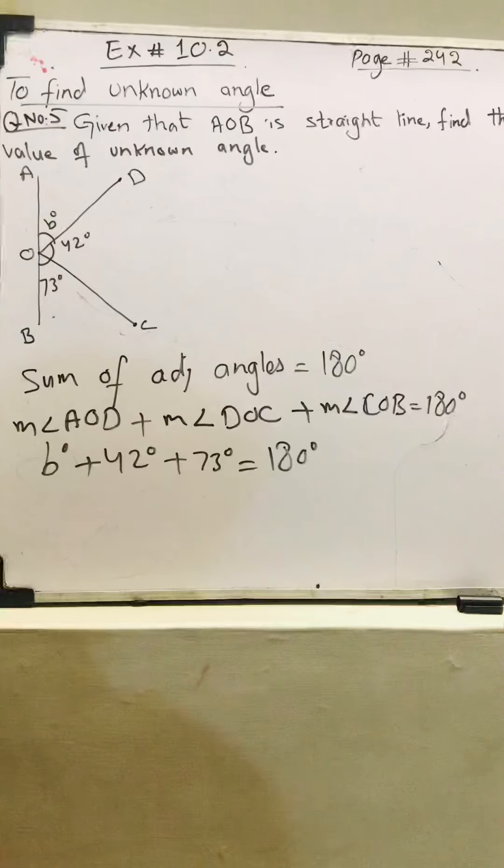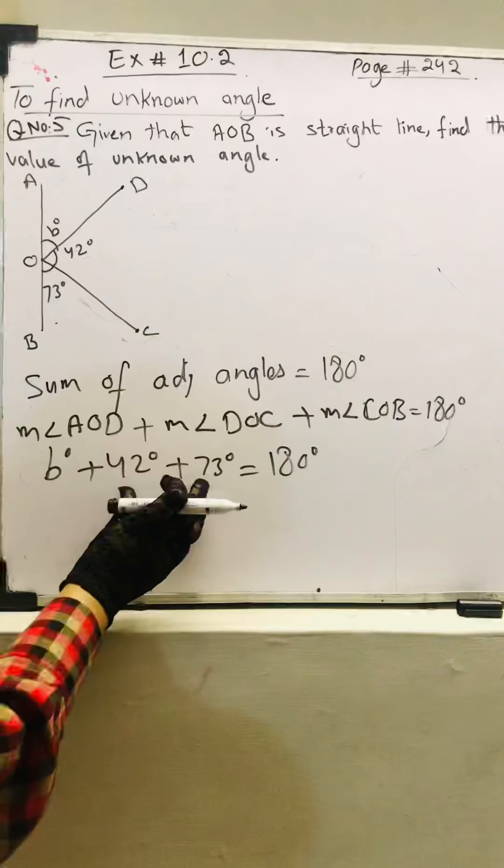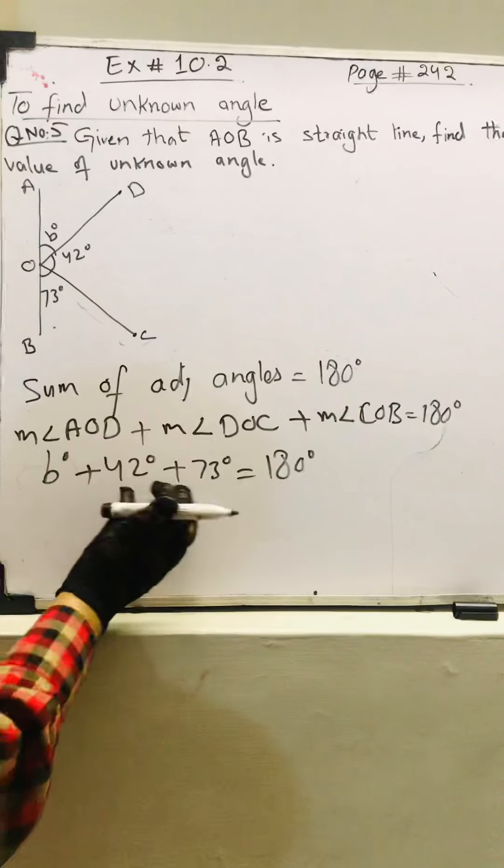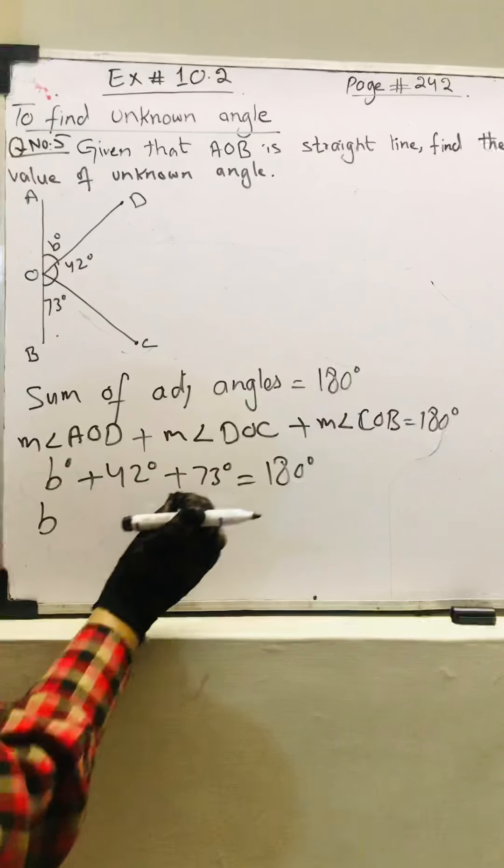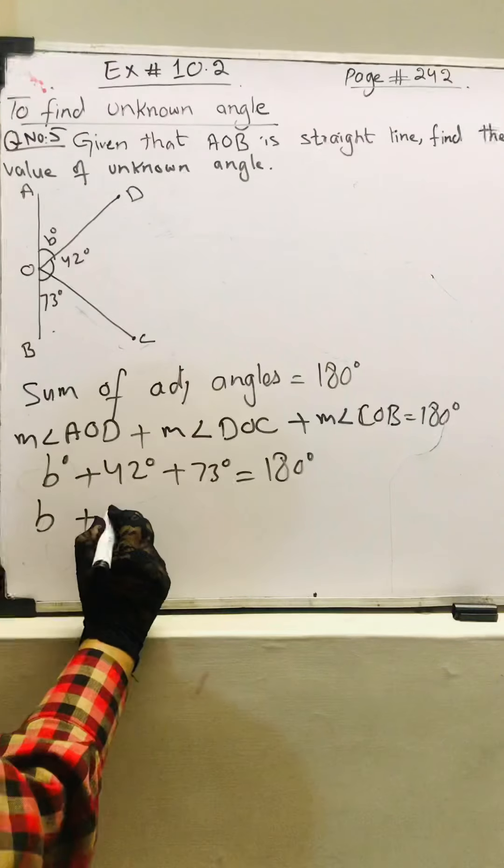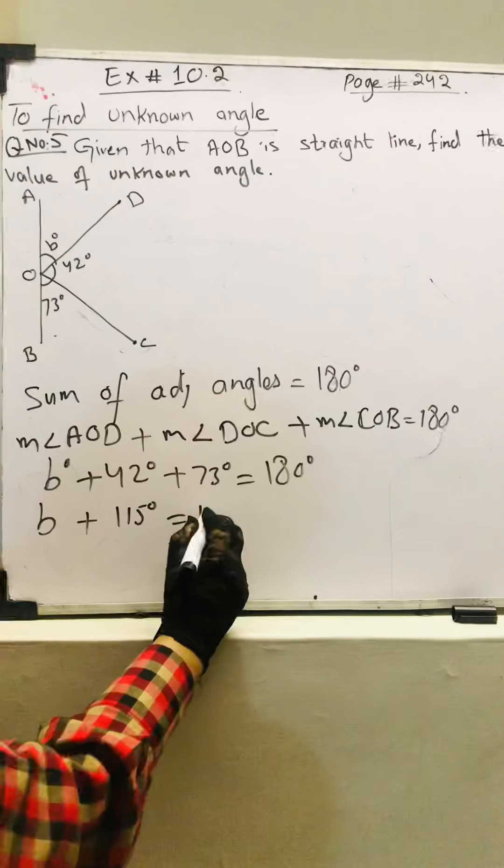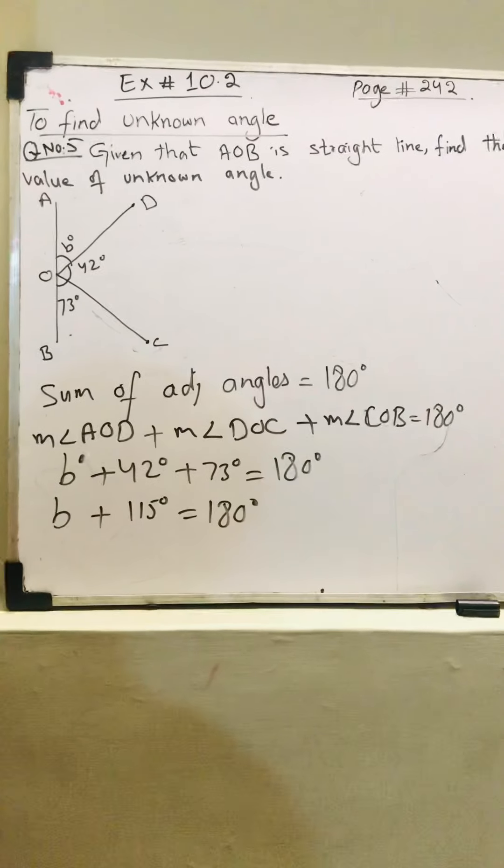So b plus 42 plus 73. I have to add these two constant terms because both have a sign of plus. When we add 42 with 73, I got 115 degrees, which is equal to 180 degrees.